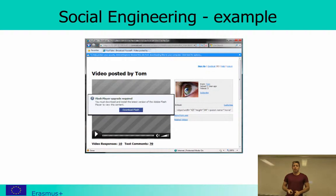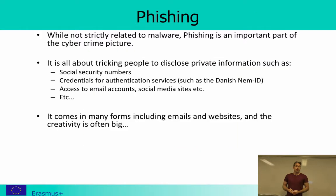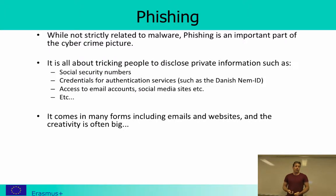So that's a short introduction to social engineering. Then we have phishing. Phishing is not strictly related to malware, but it's an important part of the overall cybercrime picture — it's about tricking the user to provide different kinds of information. The idea is that you are tricking people to disclose private information, which could be social security numbers, credit card information, credentials for authentication services such as the Danish digital identity, access to email accounts, social media sites, etc.